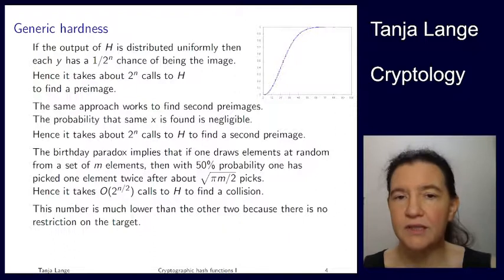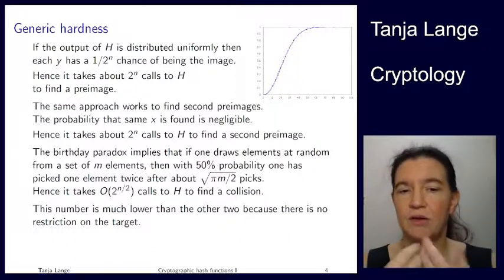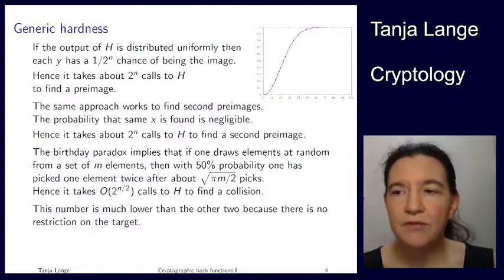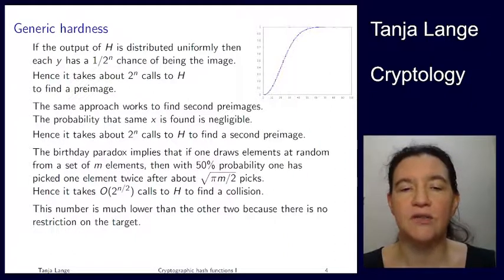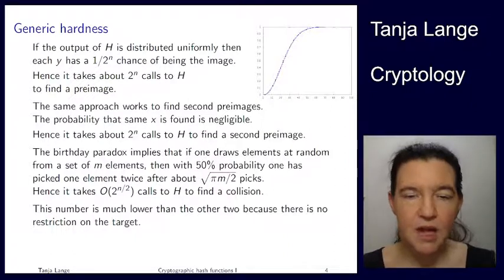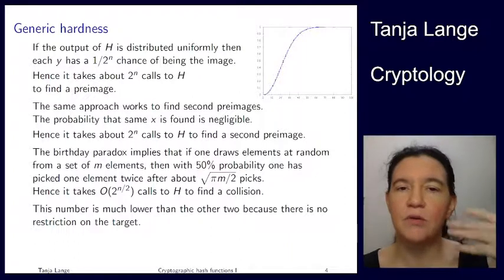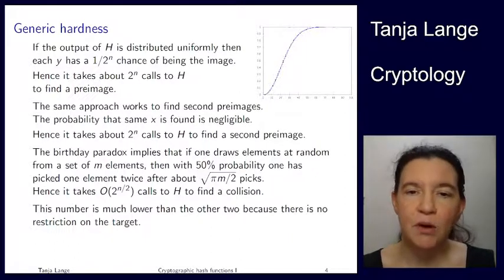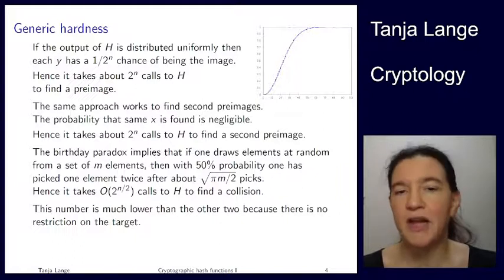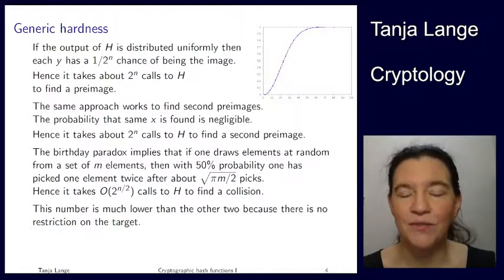Pre-image resistance and second pre-image resistance are much more restrictive than collision resistance. But for passing the sanity check of being a cryptographic hash function, the function still has to satisfy collision resistance. Nowadays we try to design systems so that they only rely on pre-image or second pre-image resistance. But several of the older schemes still rely on collision resistance, and it's one of the properties we do want to achieve.